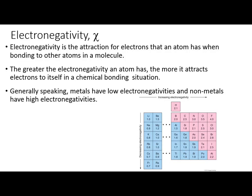When an electron entirely jumps ship — which happens when you have a metal like cesium and a nonmetal like fluorine — you end up with a positively charged cation (the metal) and a negatively charged anion (the nonmetal). The electron is fully transferred and they're held together by opposite charges.